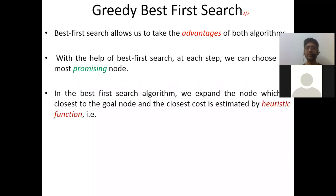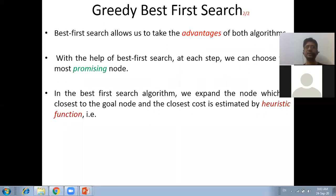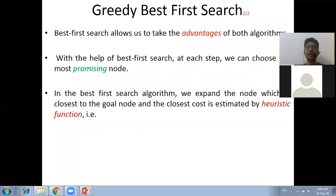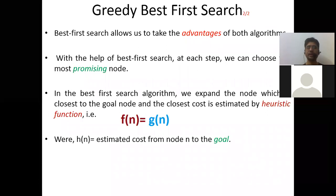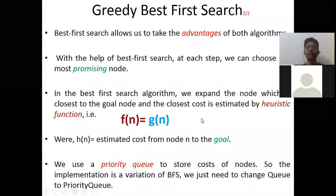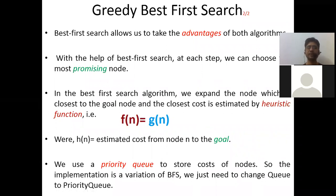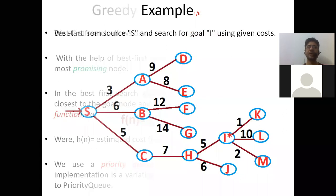With best first search, we choose the most promising node using the heuristic function h(n), which tells us which node is most promising and which has a higher cost. We expand the node closest to the goal, where the closest cost is estimated by h(n). The implementation is a variation of BFS — we just change the queue into a priority queue, giving us the cost: f(n) = h(n).